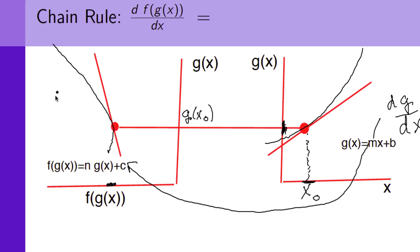So, n, let's write that down. n equals df dg. And it's evaluated about the point g of x naught. Well, what do we do next?